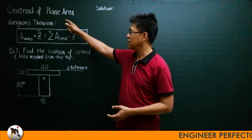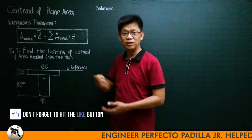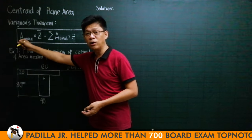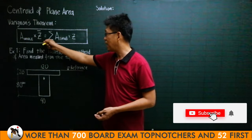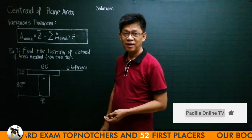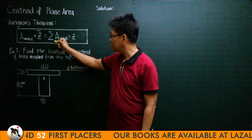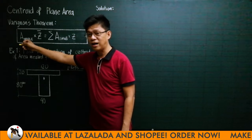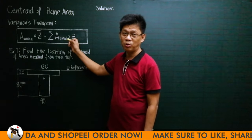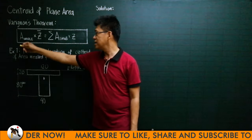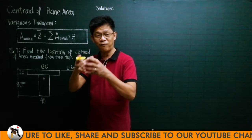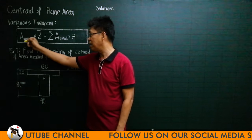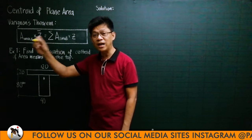When it comes to finding the centroid of a plane area, we apply Varignon's Theorem. Varignon's Theorem simply says the moment of the whole area is equal to the sum of the moments of small areas. When we say moment, it is the quantity — whether it is a force, an area, a volume, or an arc — times the distance of its centroid from the axis of reference.